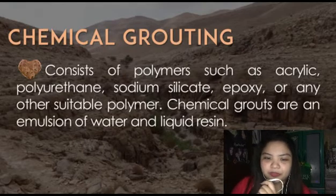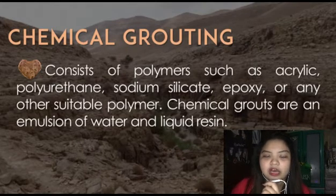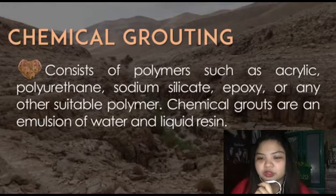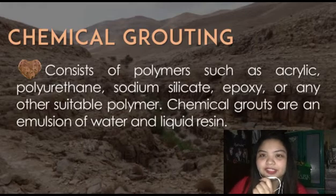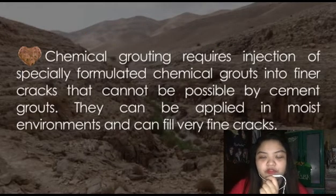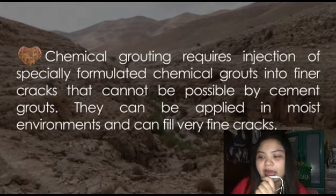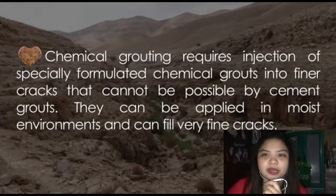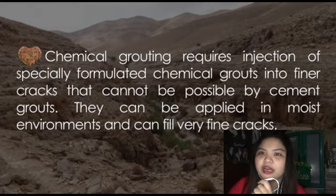The next type of grouting is chemical grouting. It consists of polymers such as acrylic, polyurethane, sodium silicate, epoxy, or other suitable polymers. Chemical grouts are an emulsion of water and liquid resin. Chemical grouting involves injecting formulated chemical grouts into thin cracks that cannot be handled by cement grout. Chemical grouting is most suitable for moist environments and is capable of filling very thin cracks.